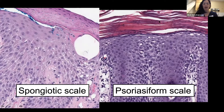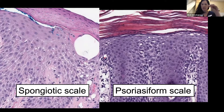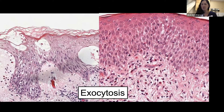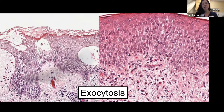In psoriasiform dermatitis, the perikeratin is usually like a whole shingled roof rather than patches of it. Exocytosis in spongiotic dermatitis can be anything — it can be lymphocytes, neutrophils, or eosinophils — but most of the time it's lymphocytes.